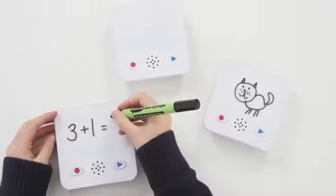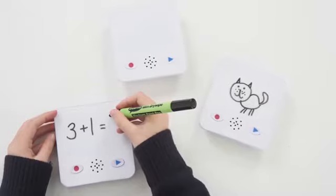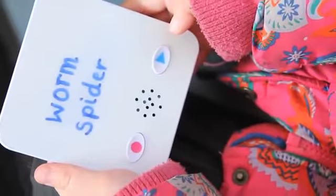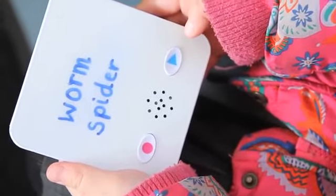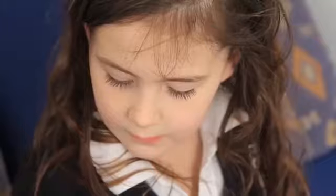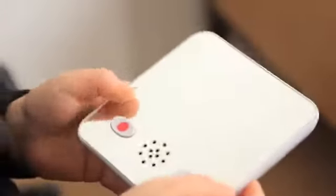Sound banks are sound recording devices with up to 30 seconds of recording time and big buttons, making them easy for children to use. To record, simply press and hold down the record button and speak into the device. To play back, simply hit the play button again.